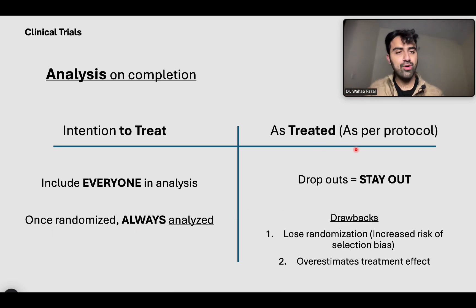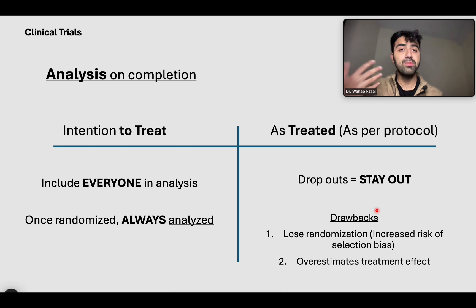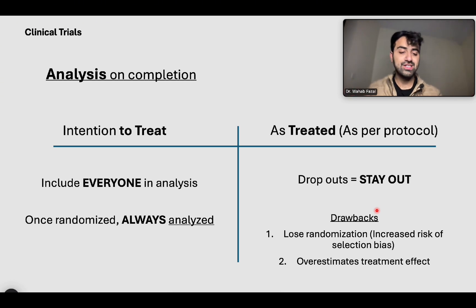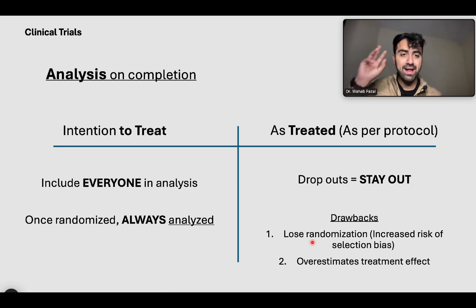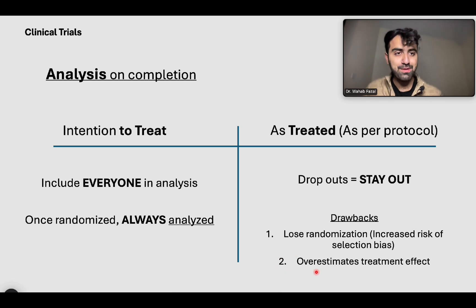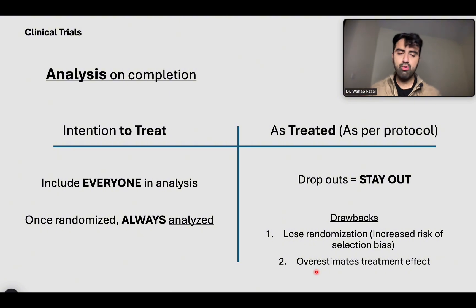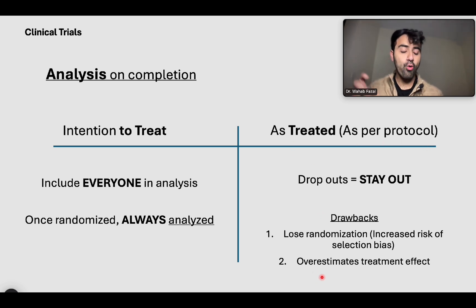There are problems with as-treated or as-per-protocol analysis. If you remove the people who passed away — say 50 out of 1,000 died — the 950 remaining have a higher chance of being healthier people. So you lose the randomization, and the people left are healthier. You might say your drug works really well in all 950 remaining, but you're not including the 50 who died along the way. That's how as-treated or as-per-protocol analysis overestimates the treatment effect.